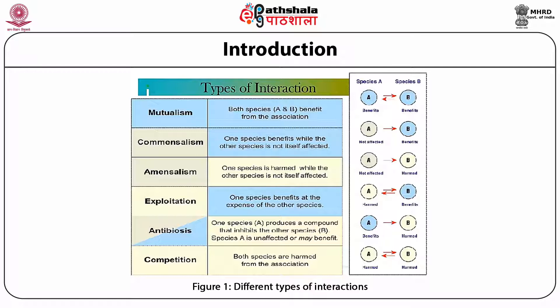Amensalism: one species is harmed while the other species is not itself affected. Exploitation: one species benefits at the expense of other species. Antibiosis: one species A produces a compound that inhibits the other species B; species A is unaffected or may benefit. Competition: both species are harmed from the association.